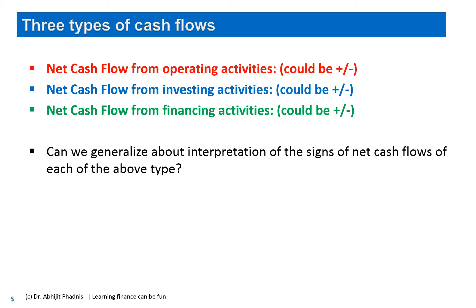The net cash flow from operating activities must be positive — we should collect more money from customers than we pay to vendors. The price we charge customers and eventually collect should exceed the costs we incur to deliver goods and services. For investing activity, net cash flow would be positive if we are getting rid of old assets without investing enough in new ones, and negative if we are investing far more than what we are selling.